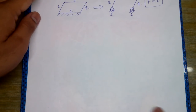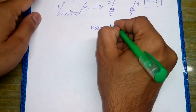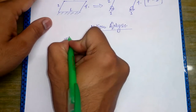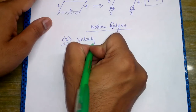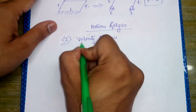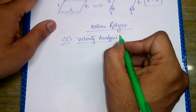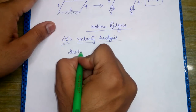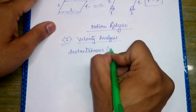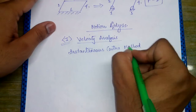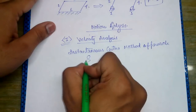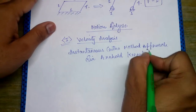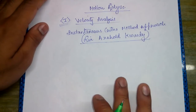The next chapter we shall start is about motion analysis. In motion analysis, the first portion to study is velocity analysis. We shall introduce the concept of the instantaneous center method of approach, which was given by Sir Arnold Kennedy. This is a very important and very simple approach.